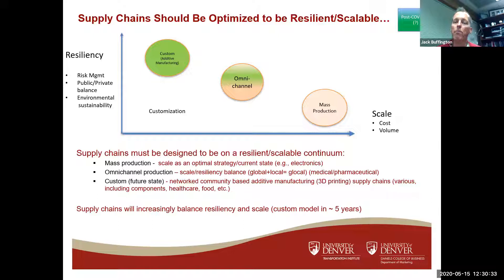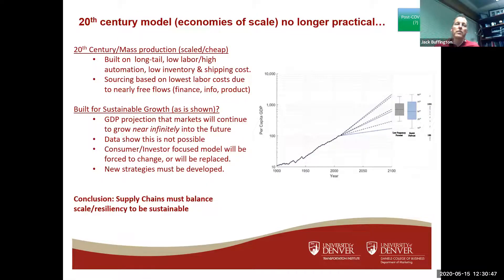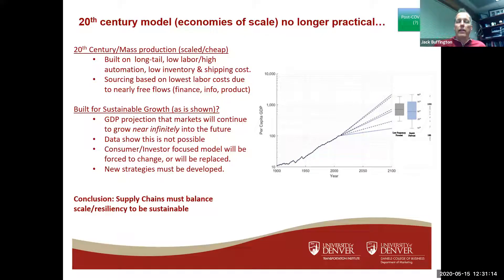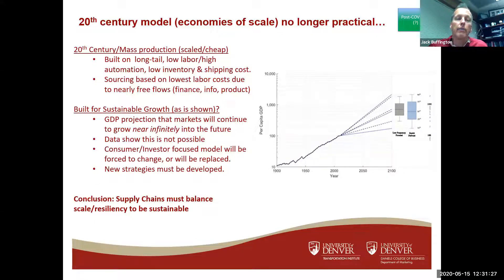These changes are going to happen quickly — probably in five years, so companies need to start thinking about what this looks like. The 20th century model of economies of scale is no longer practical. These supply chains continue to grow in this scale-and-cheap model built on long-tail supply chains and low-cost labor — these are going to be proven not sustainable. We're seeing this right now. We must build new models that balance scale and resiliency, and there is data showing a more resilient model will be a better model for growth.